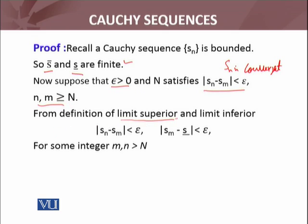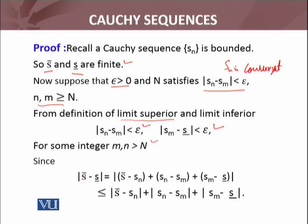From the definition of limit superior and limit inferior, Sn minus Sm less than epsilon and Sm minus limit inferior less than epsilon. Similarly, for some integer M and N, which is greater than N, we must have the difference of limit superior and limit inferior. Now Sn and Sm, I have added and subtracted. It means minus Sn plus Sn plus Sm minus Sn. In this term, I have added this.